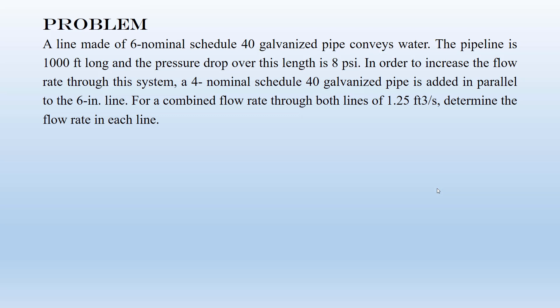Let's solve this example. Assume you have a six-inch nominal schedule 40 galvanized pipe to convey water. The length of the pipeline is 1000 feet, and you have a known pressure drop between the inlet and exit. You want to increase the volumetric flow rate, so you decide to add a new parallel pipe — a four-inch nominal schedule 40 pipe. The total volumetric flow rate for these two pipes is 1.25 cubic feet per second. You are asked to calculate the flow rate and velocity for each pipe.